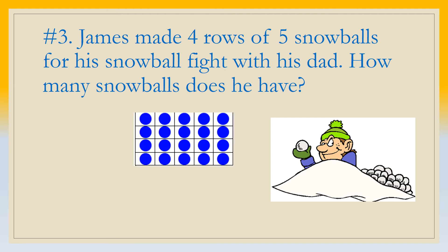You should have something like this in box number three. Four rows of five snowballs will give you twenty snowballs and that was your answer. Pause the video, do fifteen jumping jacks, and then hit play when you're ready to continue.